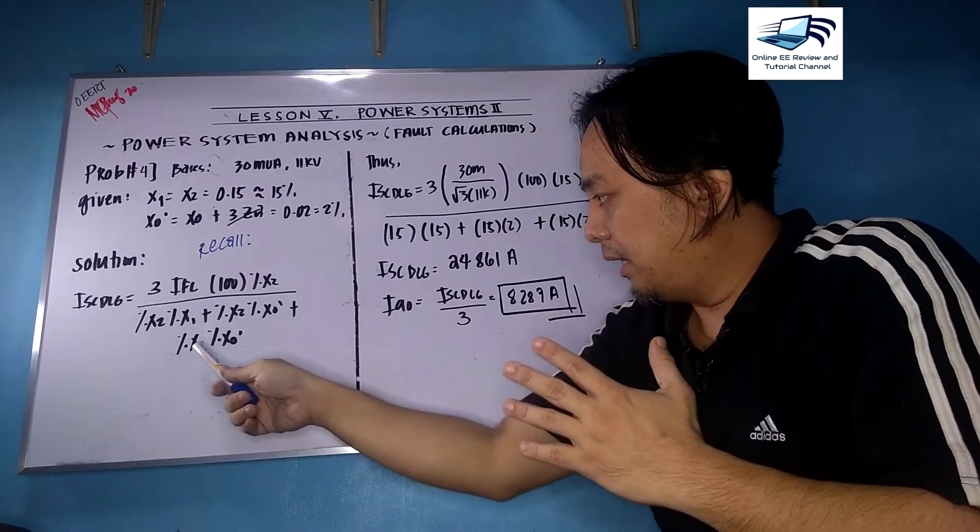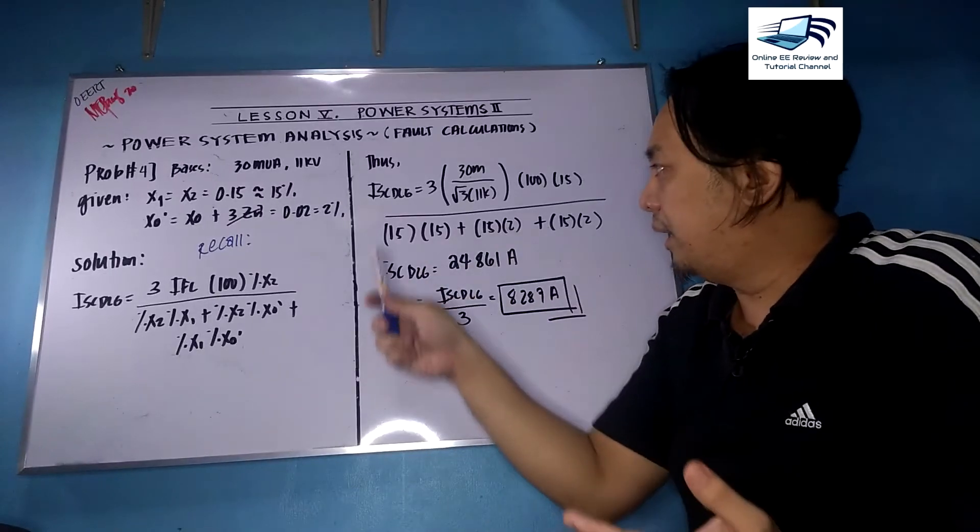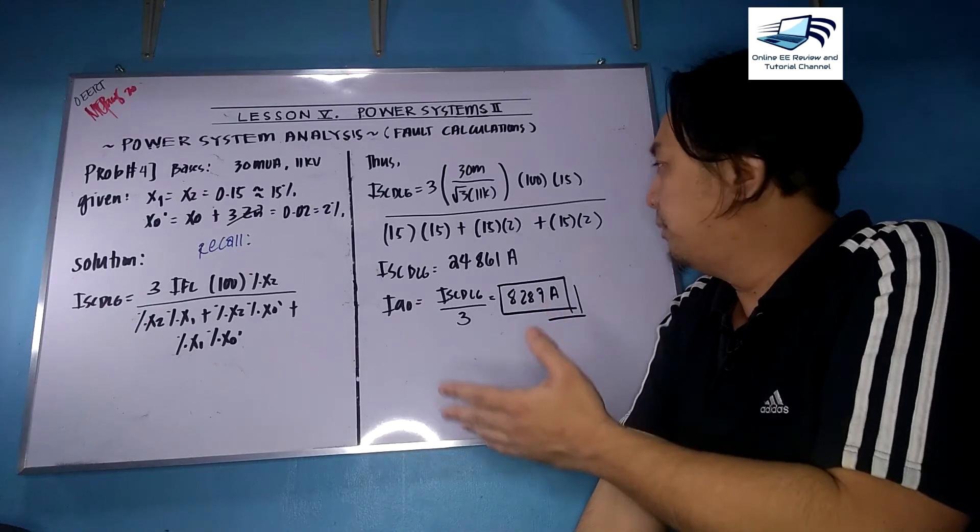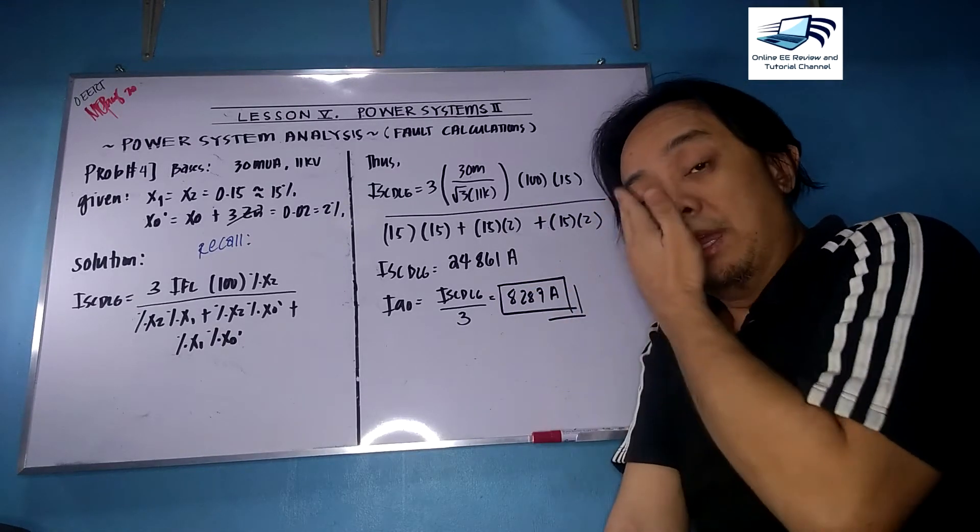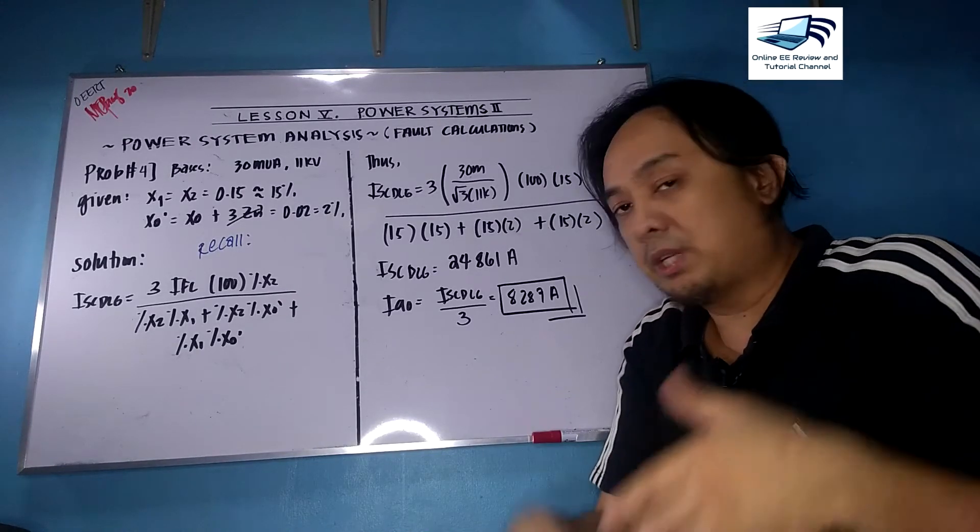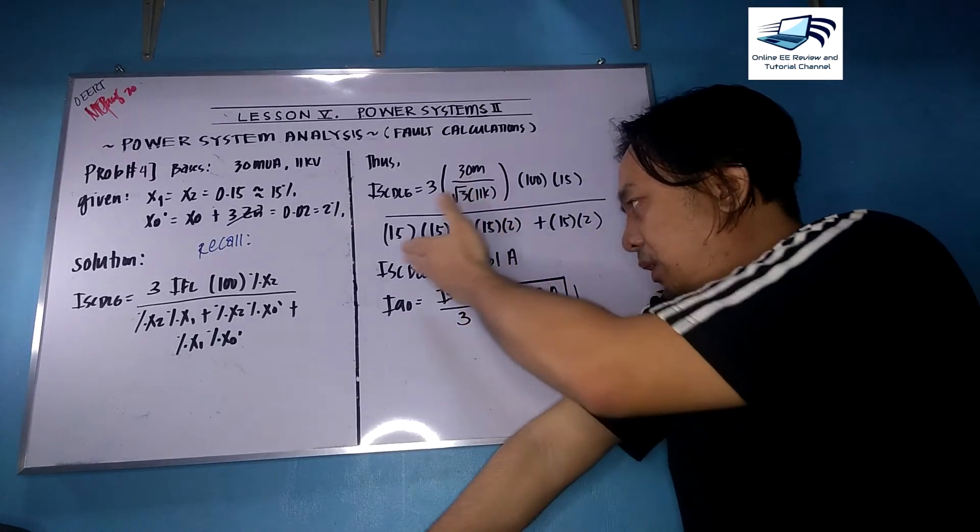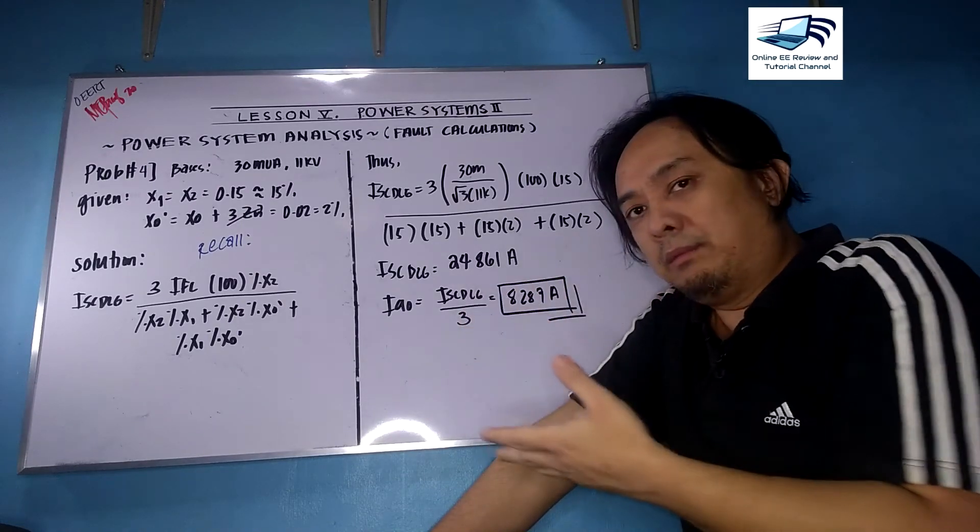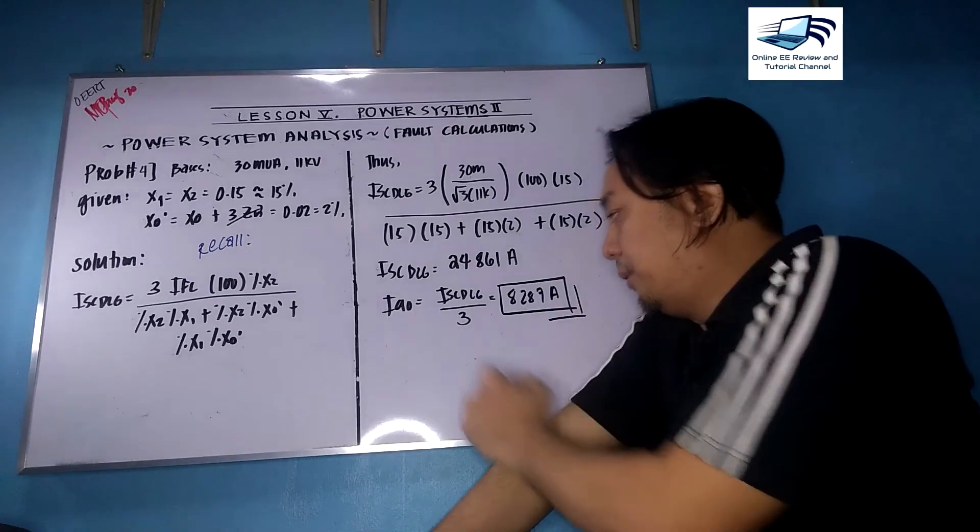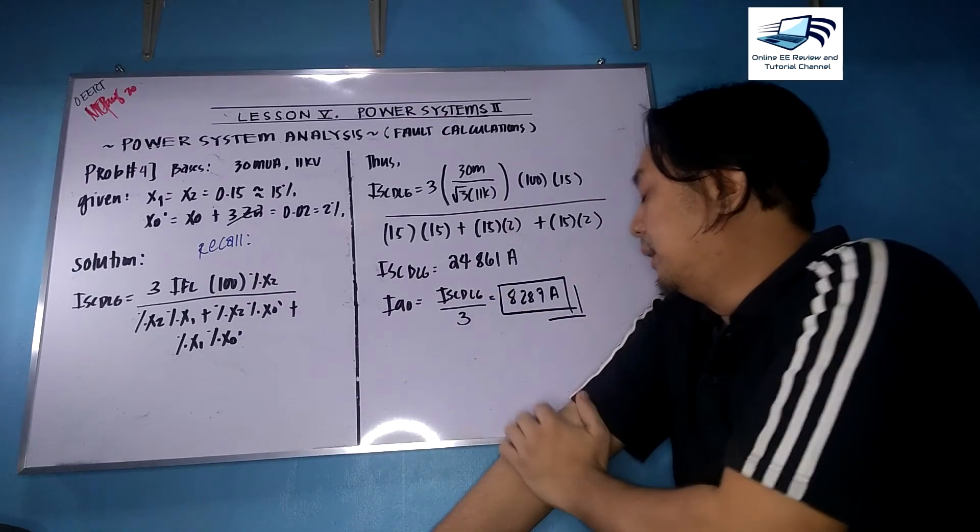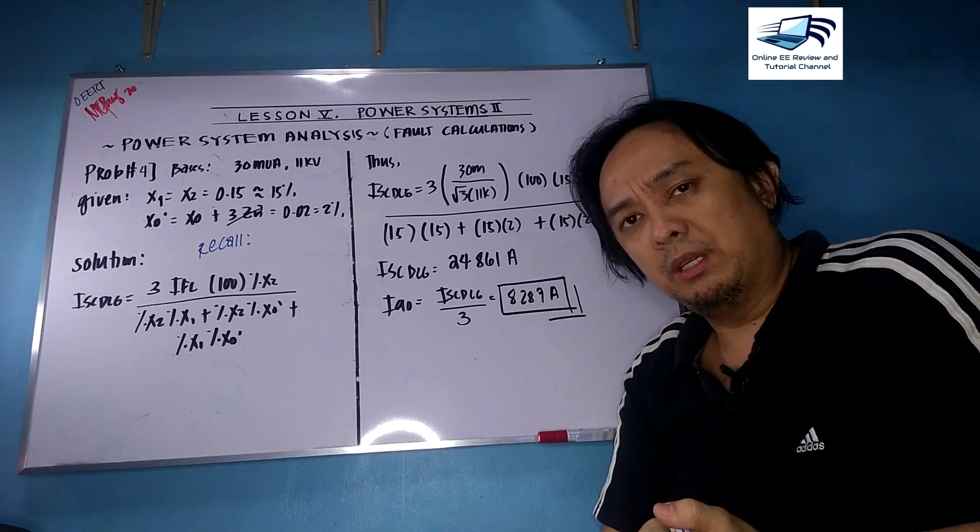X0 prime is simply equal to X0 here because there's no impedance to neutral. Substitute all the values for ISC DLG: you have 3 times 30 million over square root 3 times 11k times 100 times 15, then 15 times 15 plus 15 times 2 plus 15 times 2. The answer is 24,861, but this is not the final answer. It's not always the short circuit current that is required, but you need to get the components of the currents: can be IA, IB, IC, or even the terminal voltages. In this case, IA0 equals ISC DLG divided by three, and thus the answer is 8287 amperes. That will wrap up our discussion on symmetrical faults.